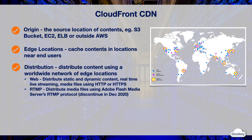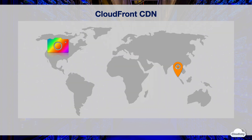You can create either a web distribution or an RTMP distribution in CloudFront. Web distribution is used for static and dynamic content such as CSS, HTML, JavaScript code of your website, real-time streaming, and media files using HTTP or HTTPS protocol. RTMP distribution is for distributing media file streaming with Adobe Flash Media Servers RTMP protocol. CloudFront is discontinuing support for RTMP distributions on December 31st, 2020, as fewer websites and applications use RTMP protocol now.